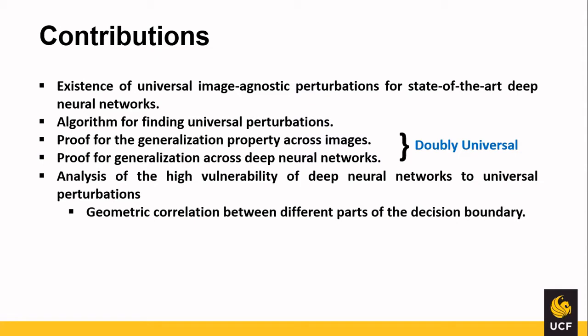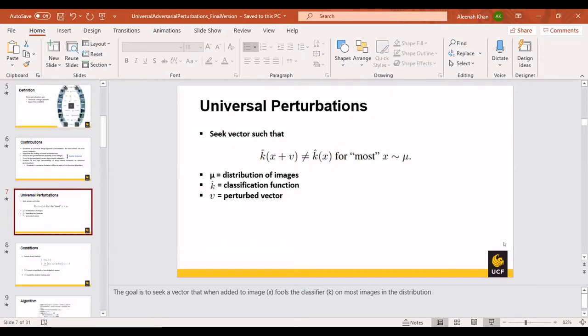My partner Kyle will take it further. For universal perturbations, we want to seek a vector such that when the vector is added to an image data point...